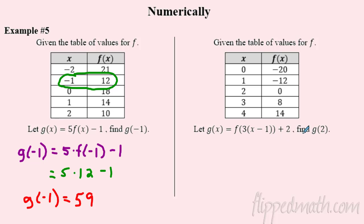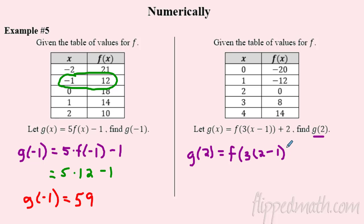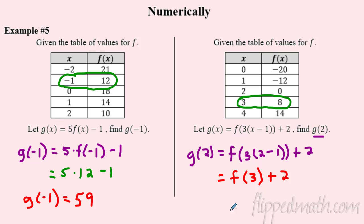This one has horizontal action — a horizontal shift right one and a compression of one third — plus adding two at the end. Don't freak out; just plug and chug. g(2) = f(one third · (2 − 1)) + 2. Simplify inside: 2 − 1 = 1, times one third gives one third — wait, actually we just get f(3) after simplifying, and then add two. Looking up f(3) in the table gives 8, so g(2) = 8 + 2 = 10.